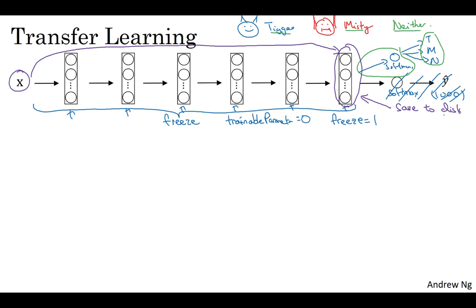And what you're doing is you're using this fixed function in this first part of the neural network to take this input, any input, any image X, and compute some feature vector for it. And then you're training a shallow softmax model from this feature vector to make a prediction. And so one step that could help your computation is you just pre-compute that layer's activation for all the examples in training sets and save them to disk, and then just train the softmax classifier on top of that.